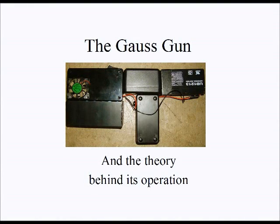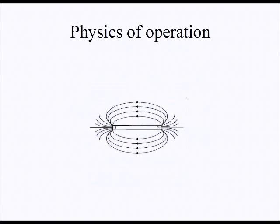The Gauss gun and the theory behind its operation. The name Gauss comes from the German mathematician and physicist who first formulated magnetic flux density, which has the unit Gauss. The first thing I will be going over is the physics of the operation.